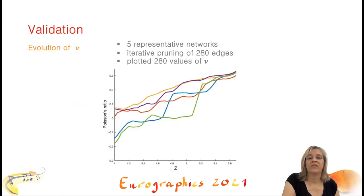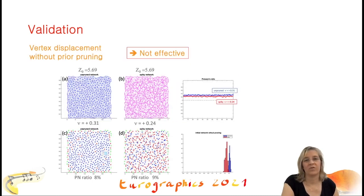After the two previous statistical validations, we now illustrate the evolution of the Poisson's ratio during the pruning algorithm for five representative networks. Right to left, we see that the Poisson's ratio decreases almost monotonically during pruning, although our criteria for deleting edges is purely geometric and local.